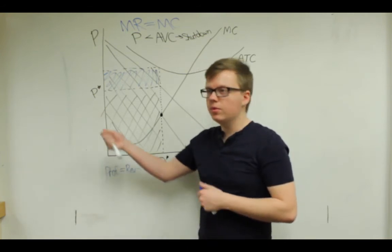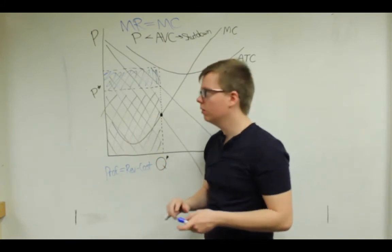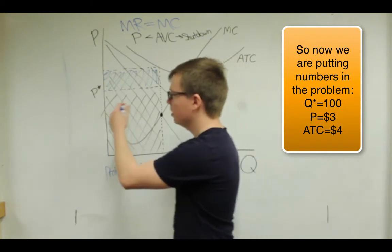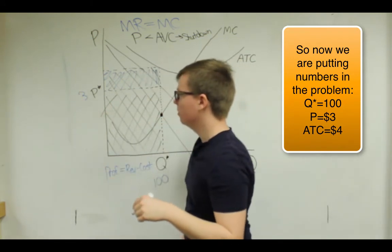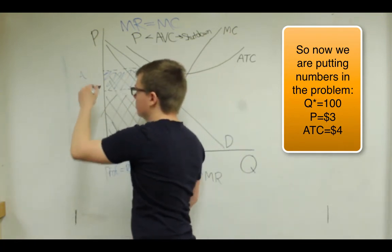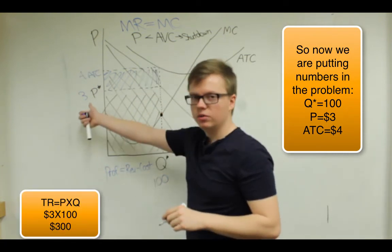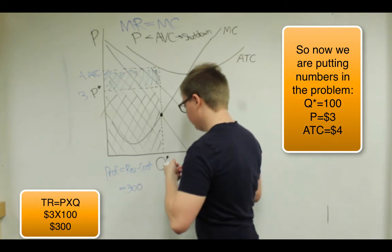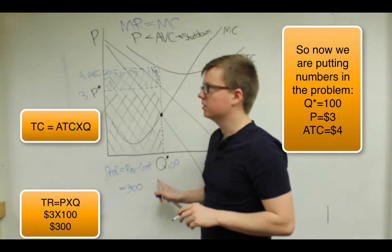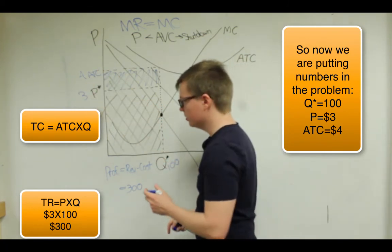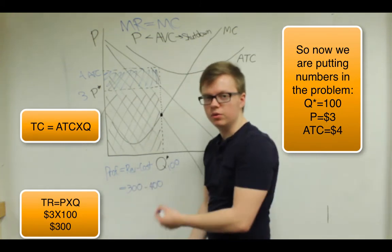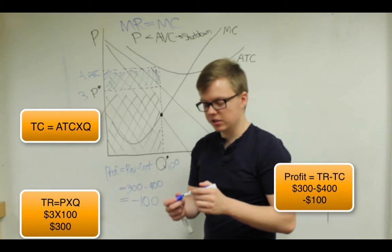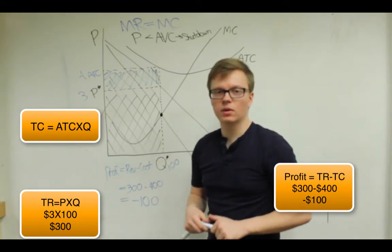So if we want to know, maybe we have numbers in this example, we want to know the actual dollar value of their loss, we could just try some numbers. So let's say the profit maximizing quantity is 100. I'm just making these numbers up. Their profit maximizing price is 3. And at that quantity, their average total cost is 4. So their revenue is price times quantity. And that would be 3 times 100. And then their cost is their average total cost times the quantity produced. So 4 times 100 is 400. And then you do 300 minus 400. That gives you profit of negative 100. Or you could just say a loss of 100. So that's how you would calculate it with actual numbers.